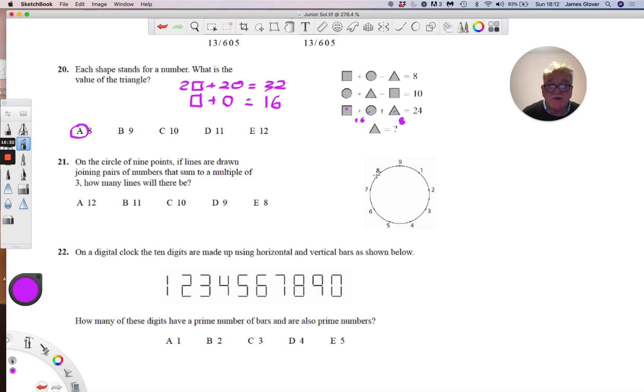To produce multiples of three, we can join pairs of digits. We could join eight and one, seven and two, six and three, and five and four. We could also join nine and three, and nine and six.